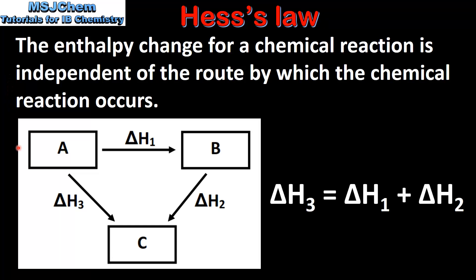In this enthalpy cycle there are two possible routes to get from reactants A to products C. One route is to go from A via B to C, the other route is to go directly from A to C. So according to Hess's law the enthalpy change for the reaction will be the same if we go from A to B to C or if we go from A directly to C.